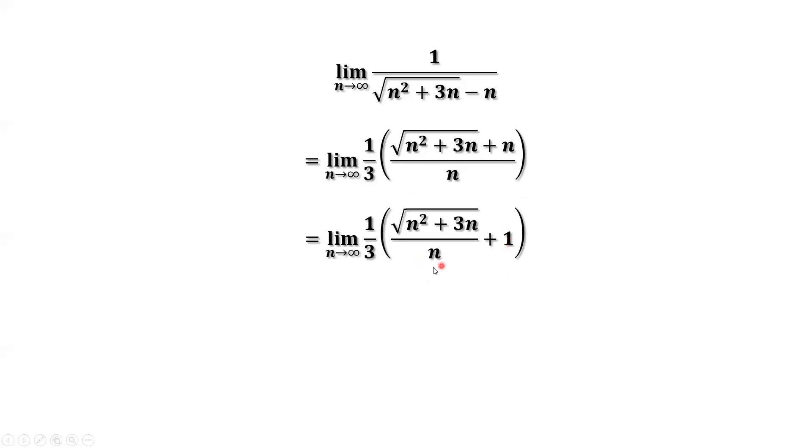And furthermore, we can continue to simplify this part. Put n under the square root. Bring n inside of the square root—n becomes n square. Split this part into two parts. n square divided by n square is 1. 3n divided by n square is 3 over n.